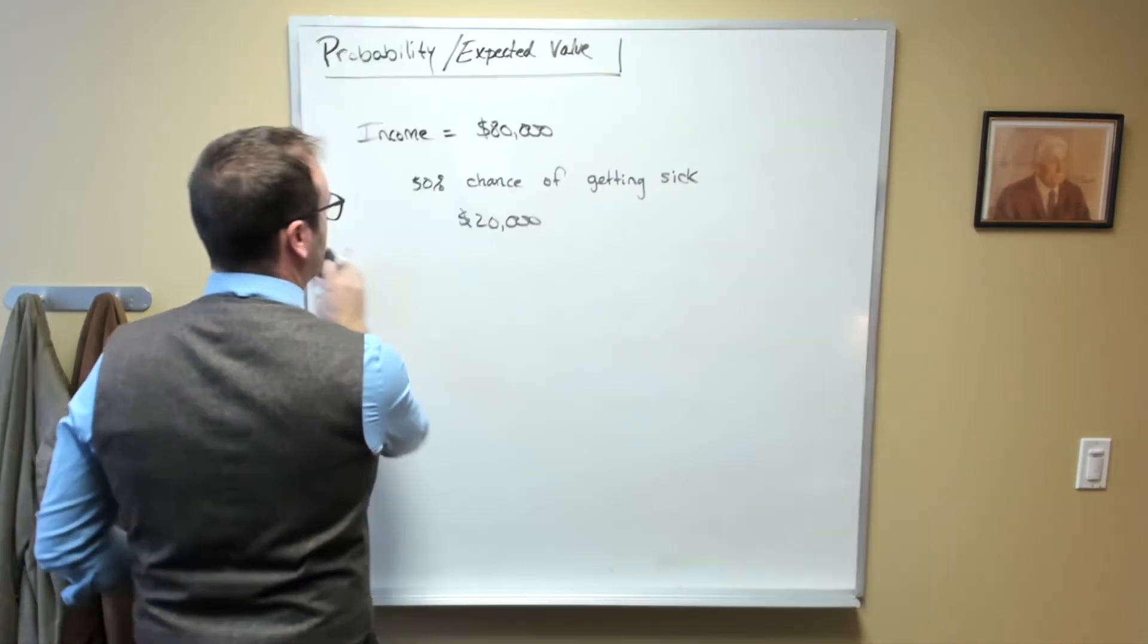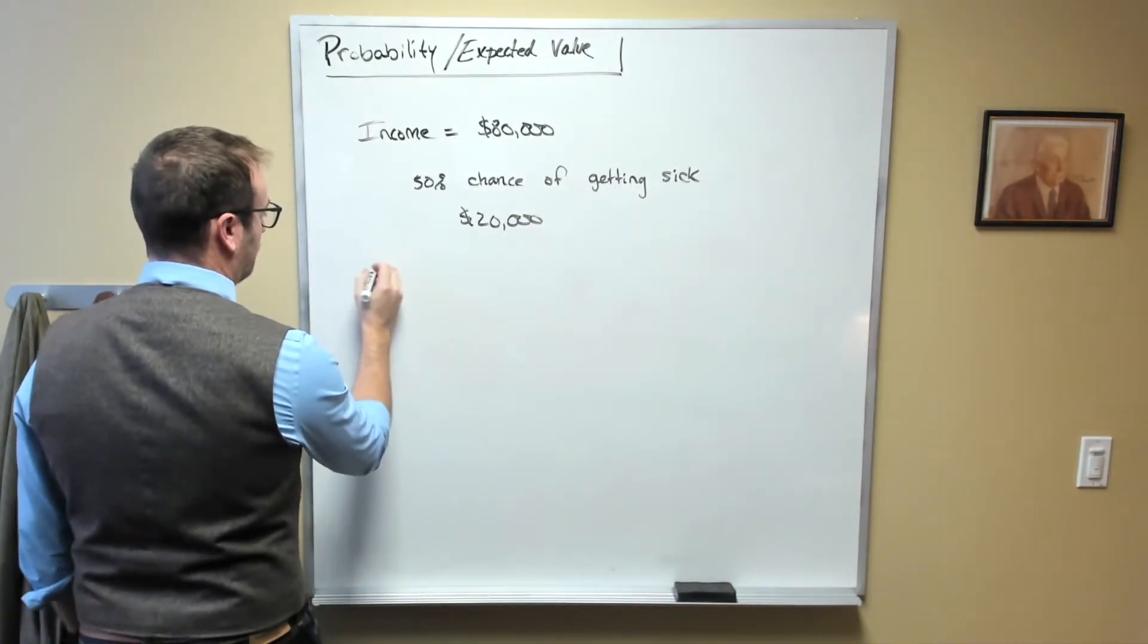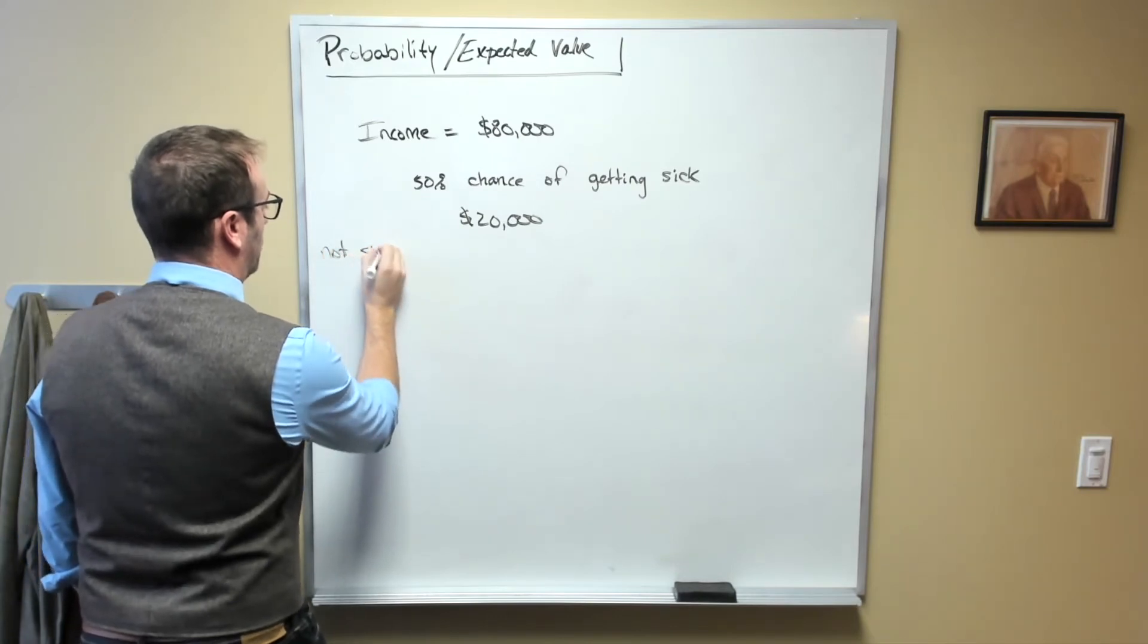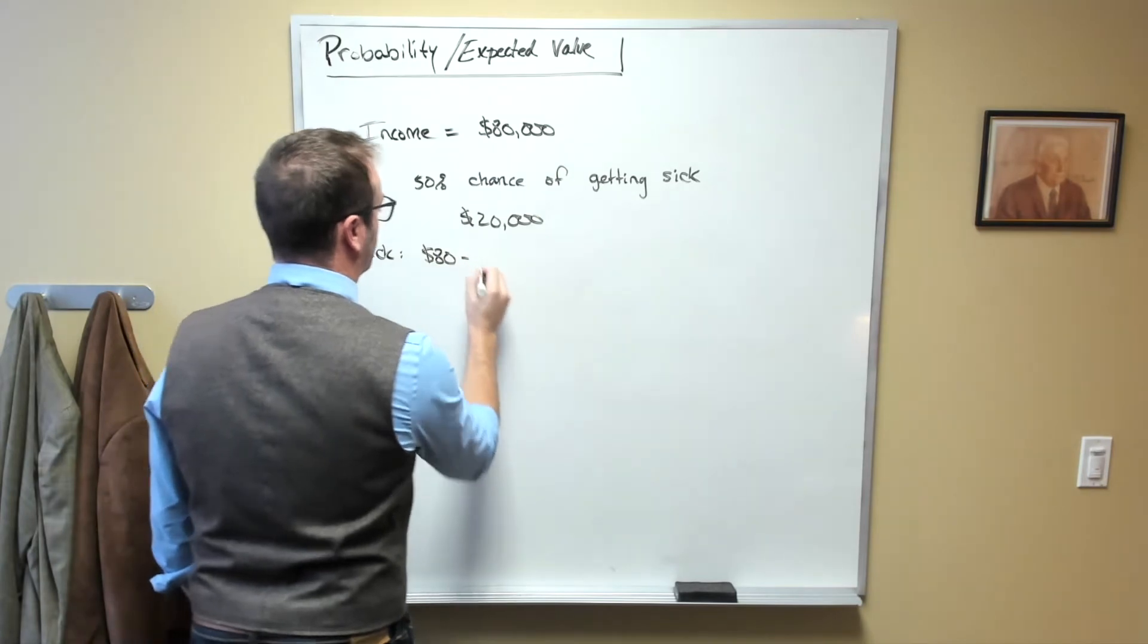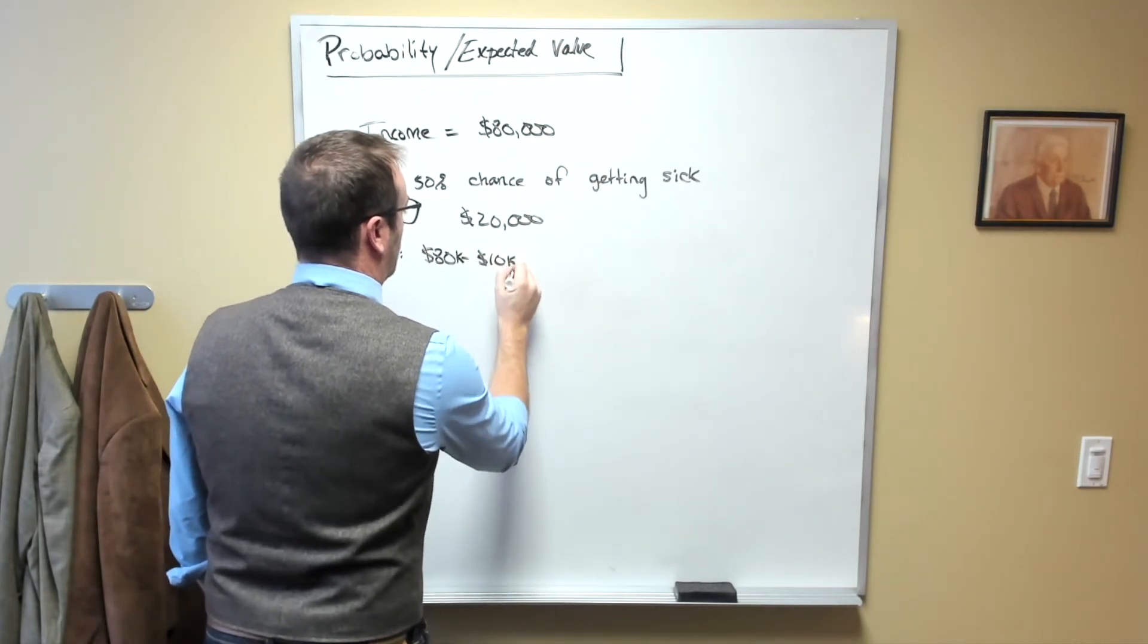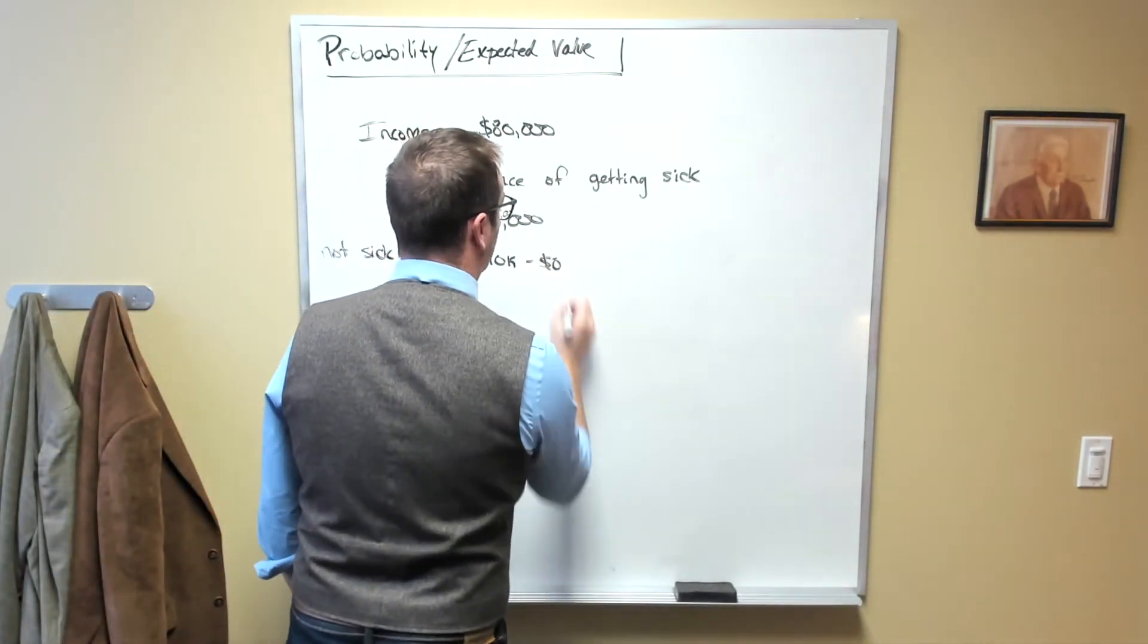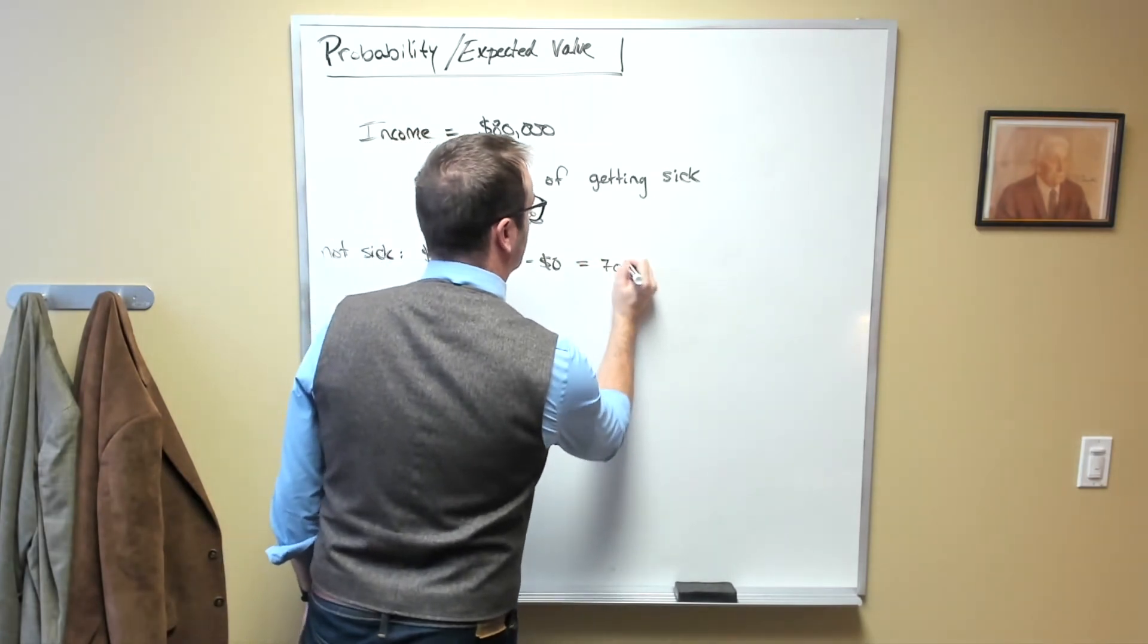Okay, and what we're going to do is we're going to divide the world into two states of the world, right? One is where you are not sick. Okay, and there you have $80,000 in income minus your $10,000 in insurance premium minus $0 in medical expenses and that's equal to $70,000.